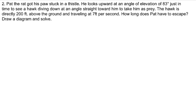Pat the rat got his paw stuck in a thistle. He looks upward at an angle of elevation of 83 degrees just in time to see a hawk diving straight toward him to take him as prey. The hawk is directly 200 feet above the ground and traveling at 7 feet per second. How long does Pat have to escape? Draw a diagram and solve.